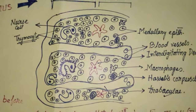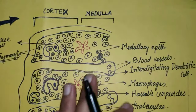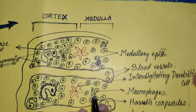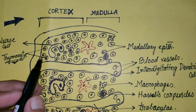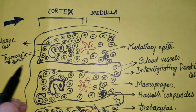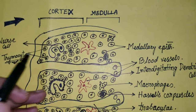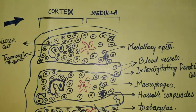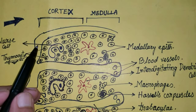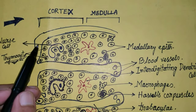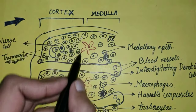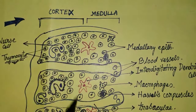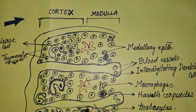Now we will discuss the cells found inside the thymus. First, the thymocytes — thymocytes are the immature T-lymphocyte cells. Thymocytes are actually generated in the bone marrow, and after development in the bone marrow, they come to the thymus for maturation. The density of thymocytes inside the cortex is maximum.